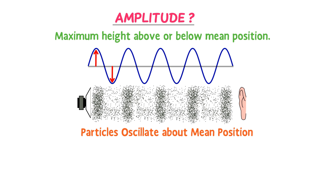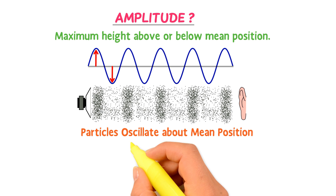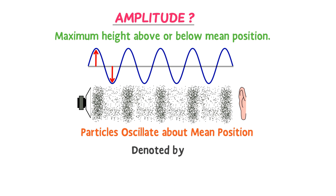Usually, amplitude is denoted by x₀. The SI unit of amplitude is meter.